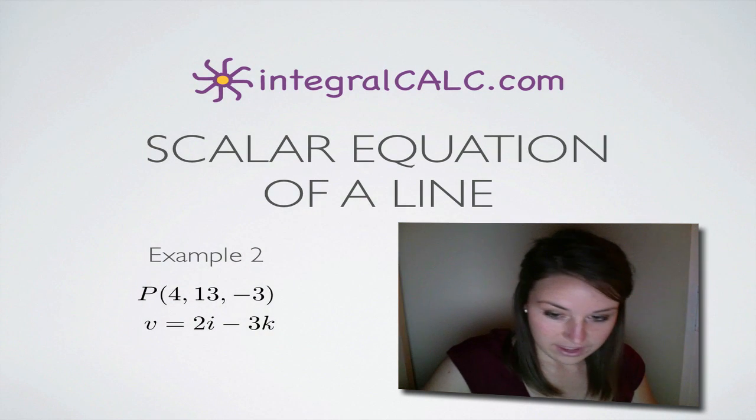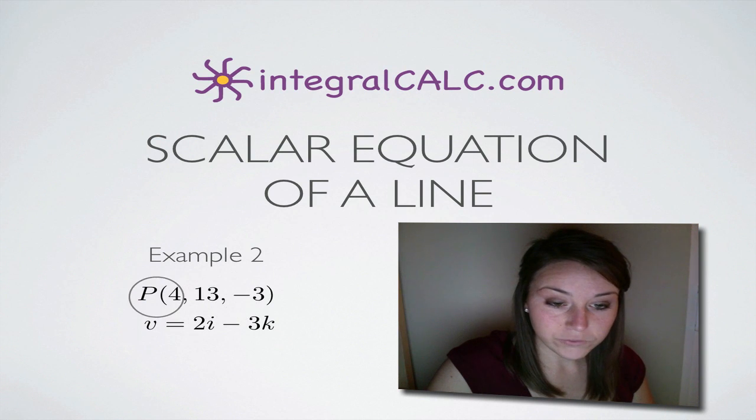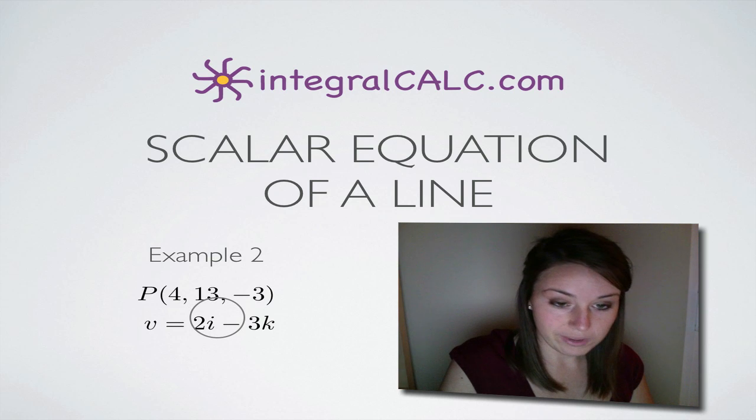And the information that we're given about this problem is the point P which is (4, 13, -3) and a vector 2i - 3k.